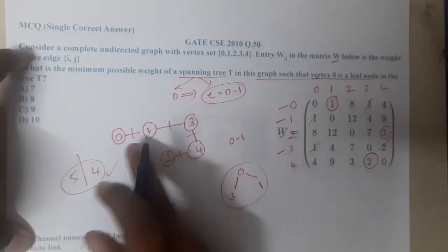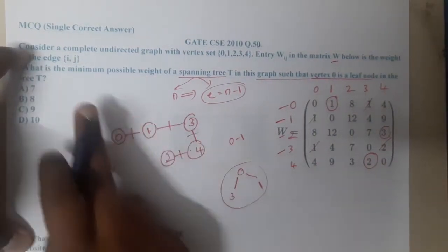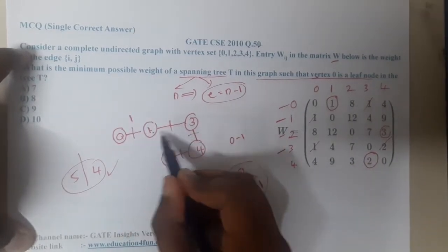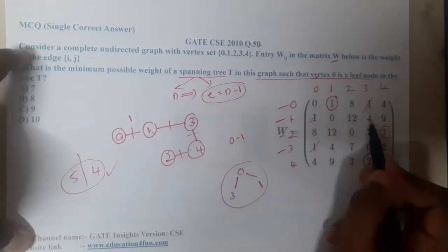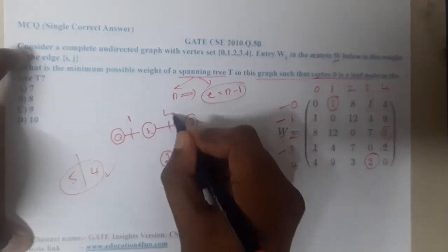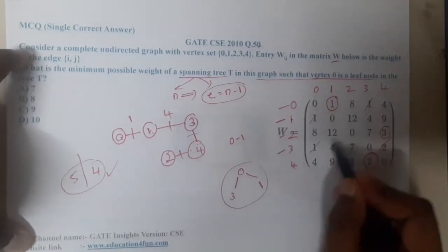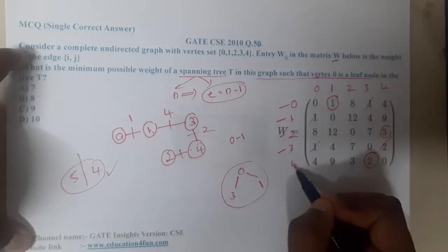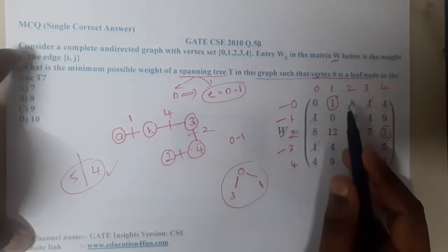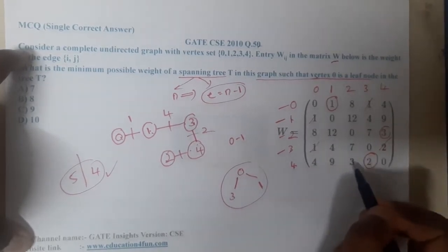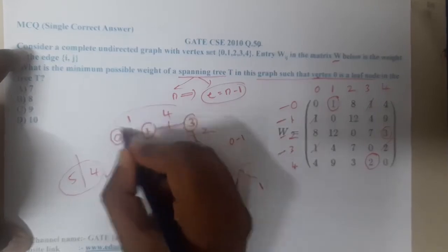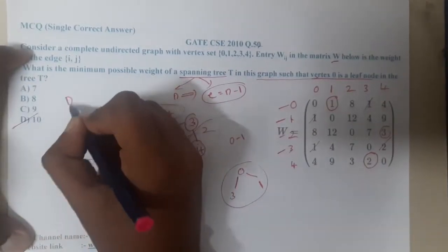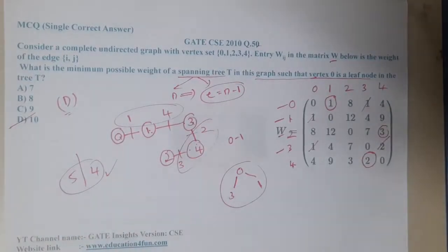Now let us calculate the total weight of this spanning tree. Edge 0 to 1 costs 1, edge 1 to 3 costs 4, edge 3 to 4 costs 2, and edge 4 to 2 costs 3. Summing these: 1 plus 4 plus 2 plus 3 equals 10. So the minimum possible weight of the spanning tree with vertex 0 as a leaf is 10.